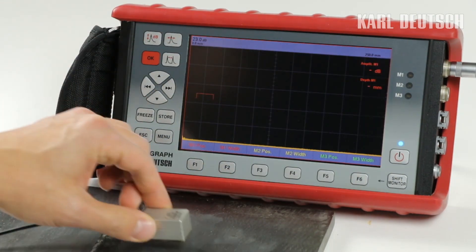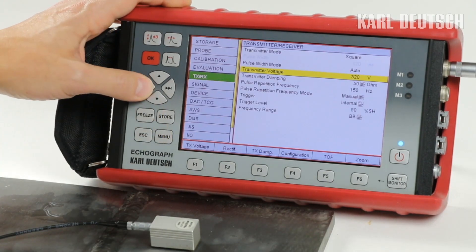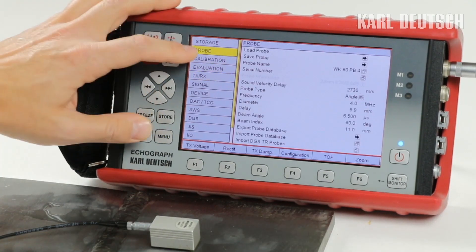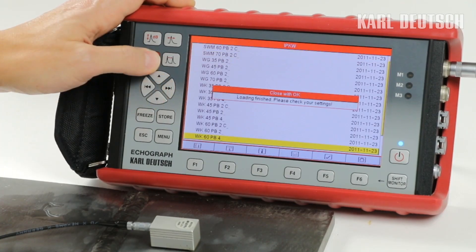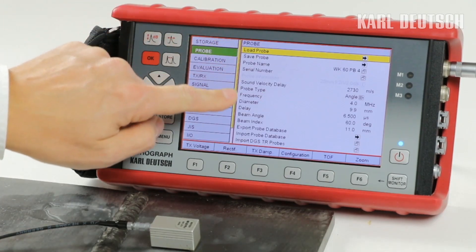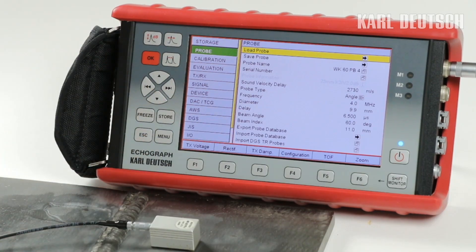For weld inspection, we need an angle beam probe. The respective probe parameters have to be properly set in the device. For this purpose, we select the probe menu and load the probe from the database. All essential probe parameters are loaded from the database into the device.